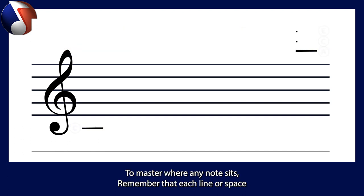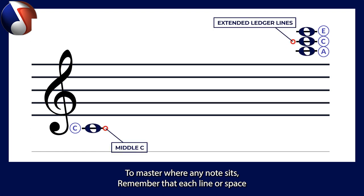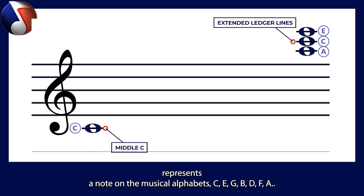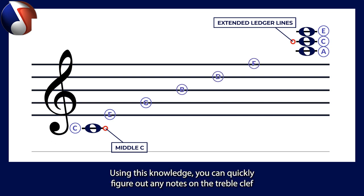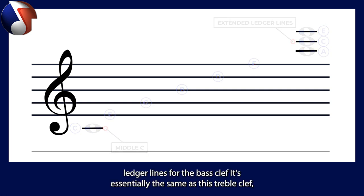To master where any note sits, remember that each line or space represents a note on the musical alphabet: C, E, G, B, D, F, A. Using this knowledge, you can quickly figure out any note on the treble clef ledger lines.